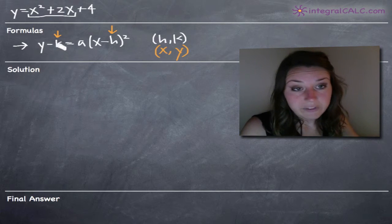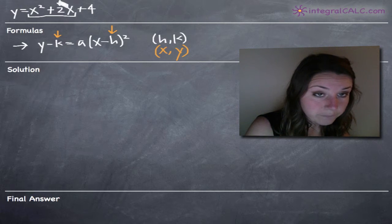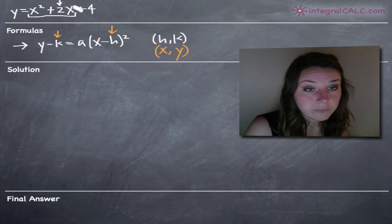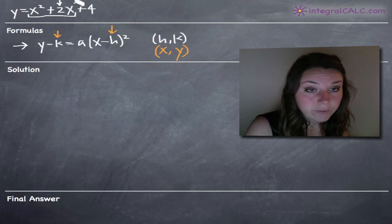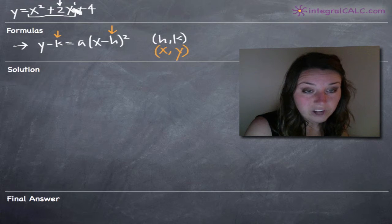I've got a whole section about completing the square on my website. But basically the way that works is we're going to take the coefficient on our first degree term. Our first degree term is the one that's raised to the first power.